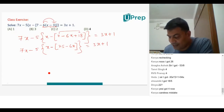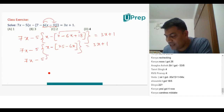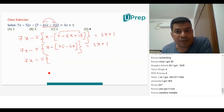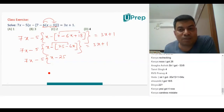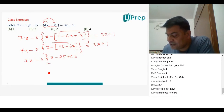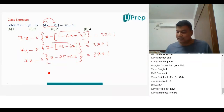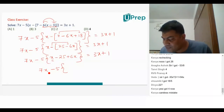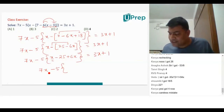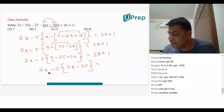Continue with 7x minus 5 times the flower bracket x minus. Now inside the bracket: minus of 25 is minus 25; but minus multiplied with minus 6x — minus into minus is plus — so you have plus 6x. The flower bracket closes, equal to 3x plus 1. Now simplify inside the flower bracket: x plus 6x is 7x, minus 25 remains. So the flower bracket closes. Equal to 3x plus 1.